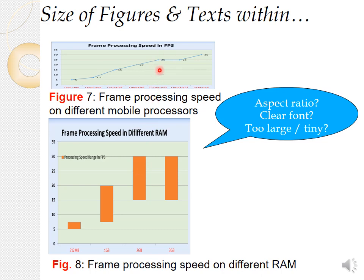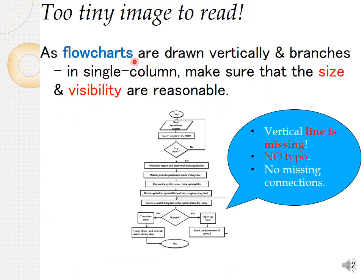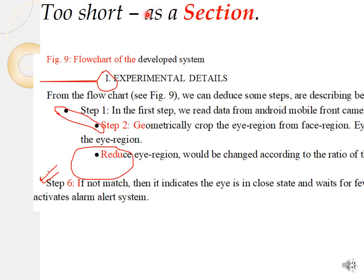These figures are not good quality at all — the font is unclear, too large or too tiny. Make sure this is properly done. Also, if you wrote 'Figure' in one place and 'Fig.' in another, that's not good. Flowcharts are normally vertical and have many branches. In a single column it is okay, but in a double column the size becomes an issue. Make sure there are no missing connections in flowcharts and that everything is properly done.